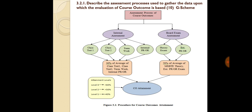For CO attainment, we have to describe the assessment process used to gather the data upon which the evaluation of course outcome is based. For example, in G-scheme, the assessment process of course outcome is based on internal assessment and board exam assessment. The internal assessment is the mid-semester assessment, and the board exam assessment is the end-semester assessment. The internal assessment consists of class test 1, class test 2, term work, and internal oral practical.